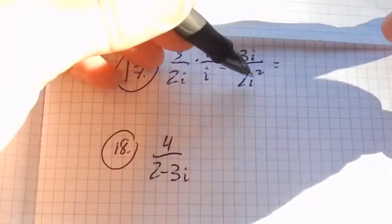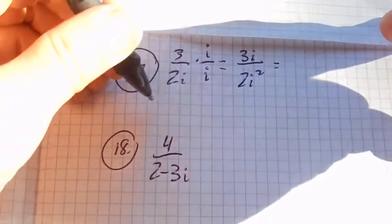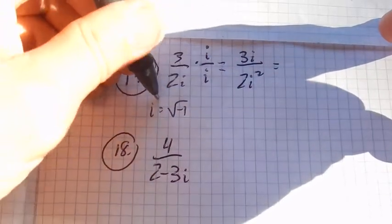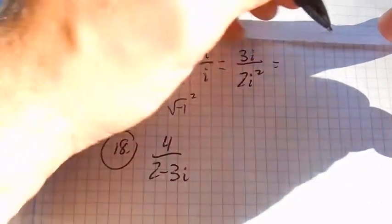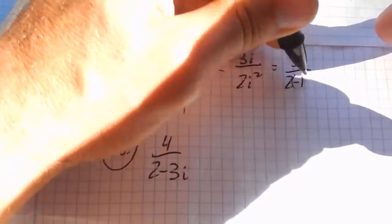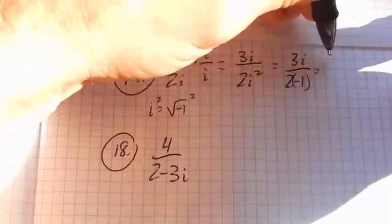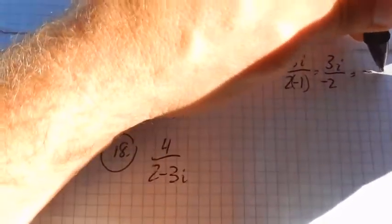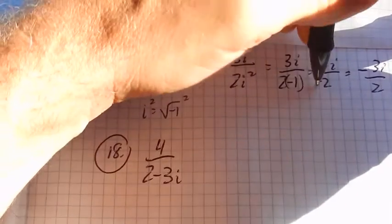But we know what i squared is. i squared is negative 1. Remember, i is the square root of negative 1. So if I square that, it's negative 1. So this is 3i over 2 times negative 1, which is 3i over negative 2, which is the same as negative 3i over 2. A positive divided by negative is negative.